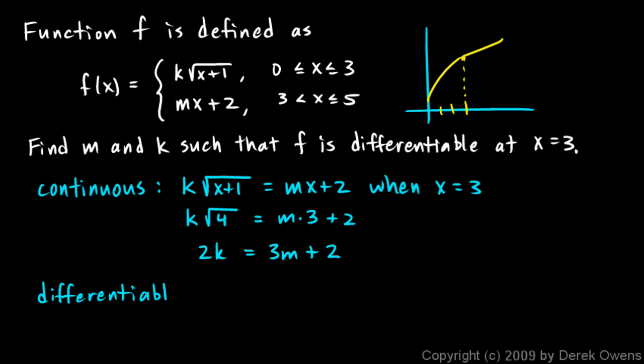And remember we said that for it to be differentiable, it has to be smooth. That means the slope has to be the same from each side. Well the slope on the left will be the derivative of this, and the slope on the right will be the derivative of that. And those derivatives have to be equal right at that point when x is equal to 3.